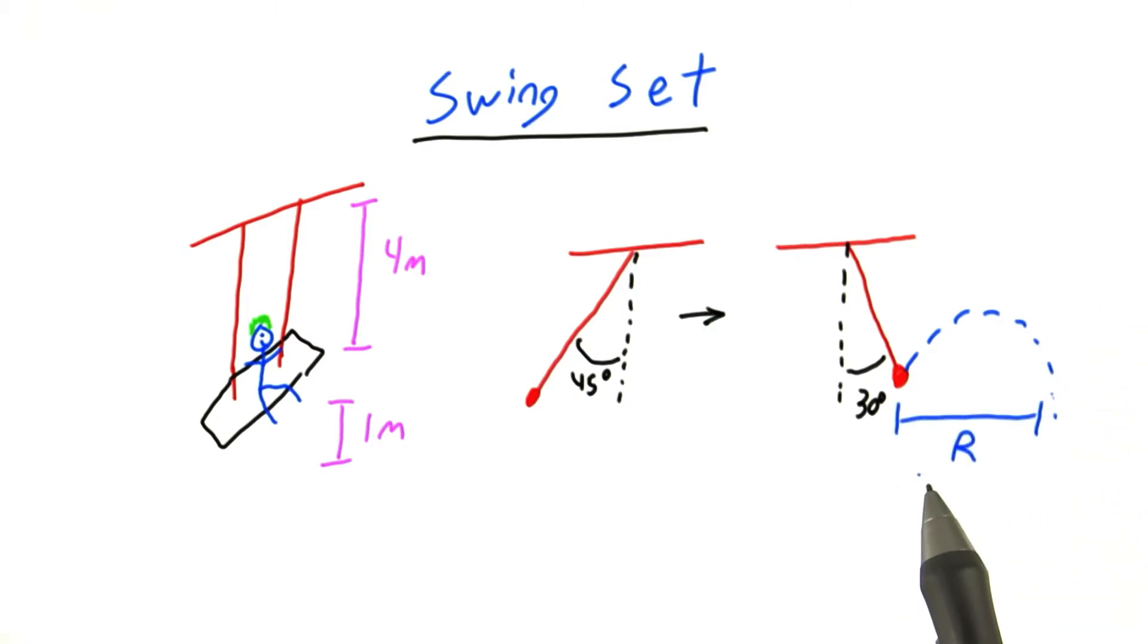Now, can you tell me how far away from the swing you'll land? You should measure this distance from the point on the ground to right below the point where you jumped off the swing.